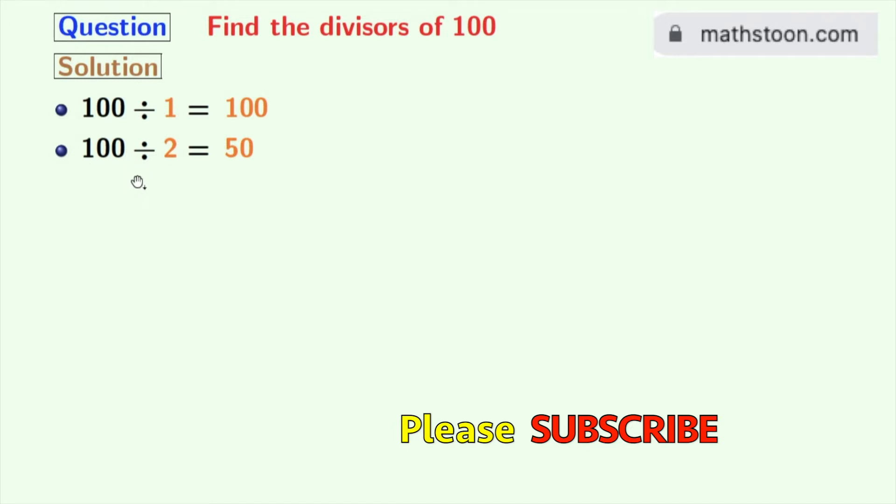Next number is 3 but this number does not divide 100. So we will try for 4. 100 divided by 4 is 25. So, 4 and 25 are the divisors of 100.